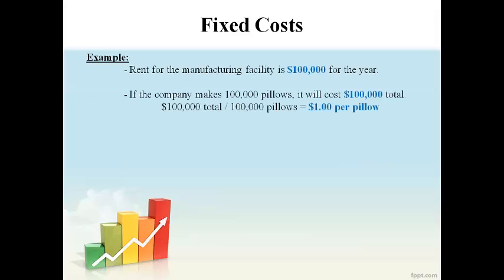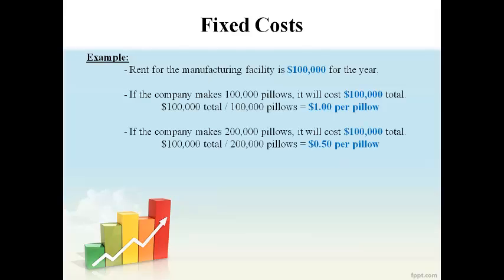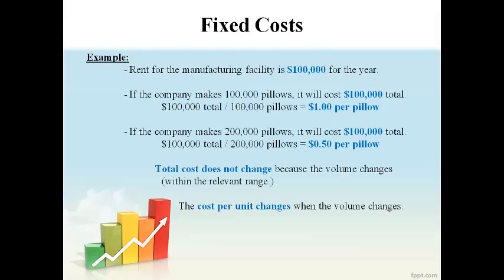Here's an example of a fixed cost. The rent for the manufacturing facility is $100,000 regardless of how many products are made. This cost is incurred as time passes. The cost per pillow when 100,000 pillows are made is $1 per pillow. The cost per pillow decreases when more pillows are made. Making 200,000 pillows, twice as many, reduces the cost per pillow by half. Total fixed costs do not change because the volume of products changes. This does not mean that a fixed cost will not be different than expected — it just means that the fixed cost will not change because volume changes.